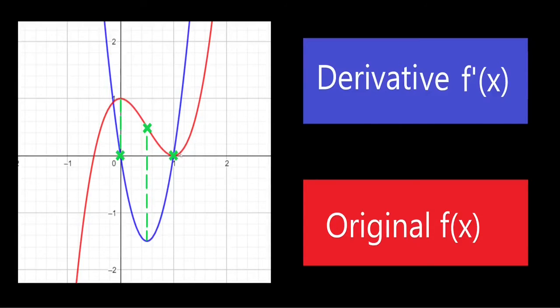Same goes here for the minimum. Here, the slope is also 0. Because, you know, it's a maximum. It's an extremum. And the slope is 0. And so, once again, it's a derivative's y value.